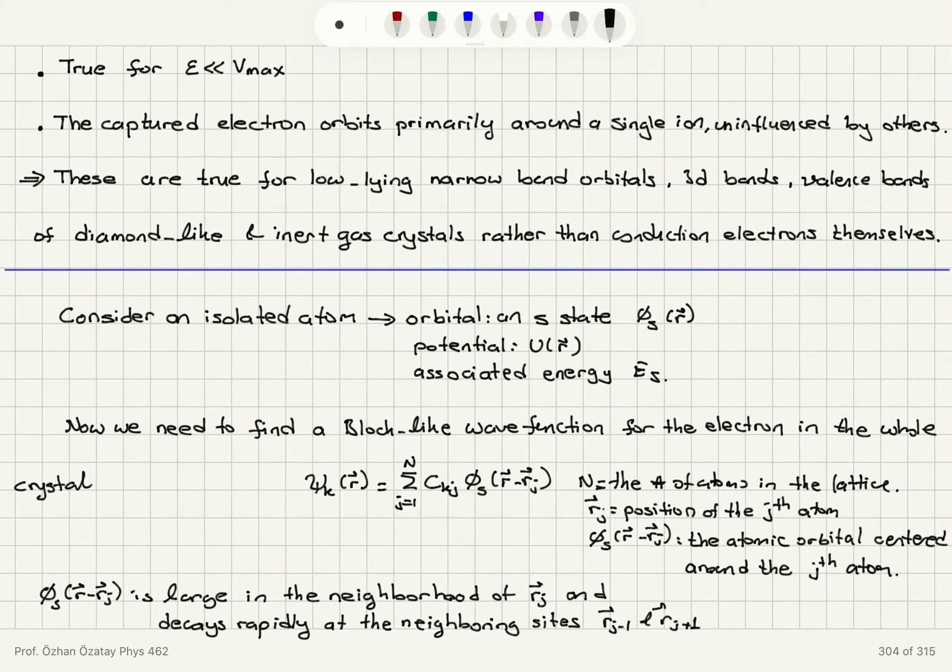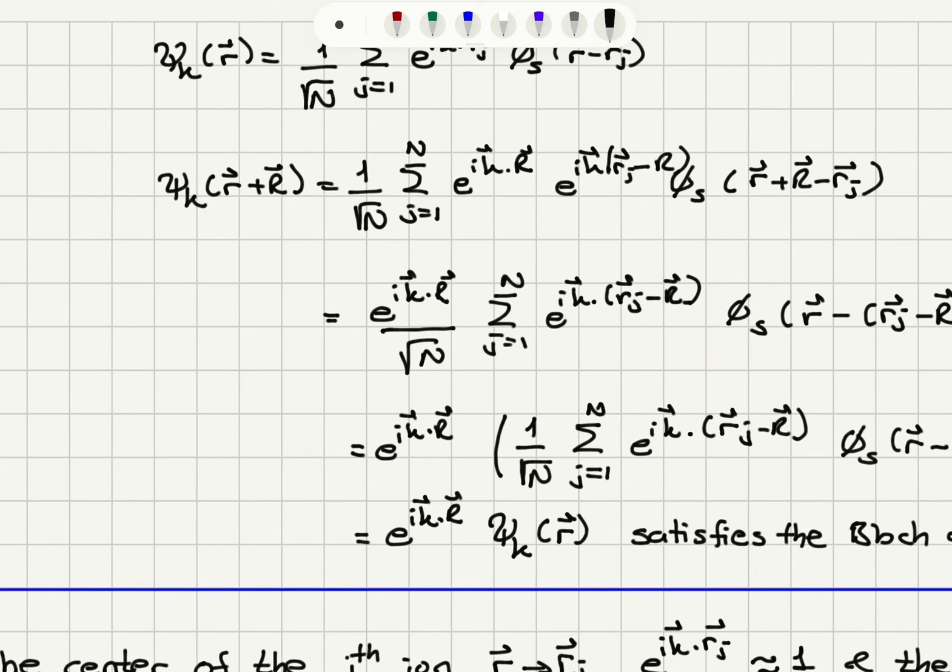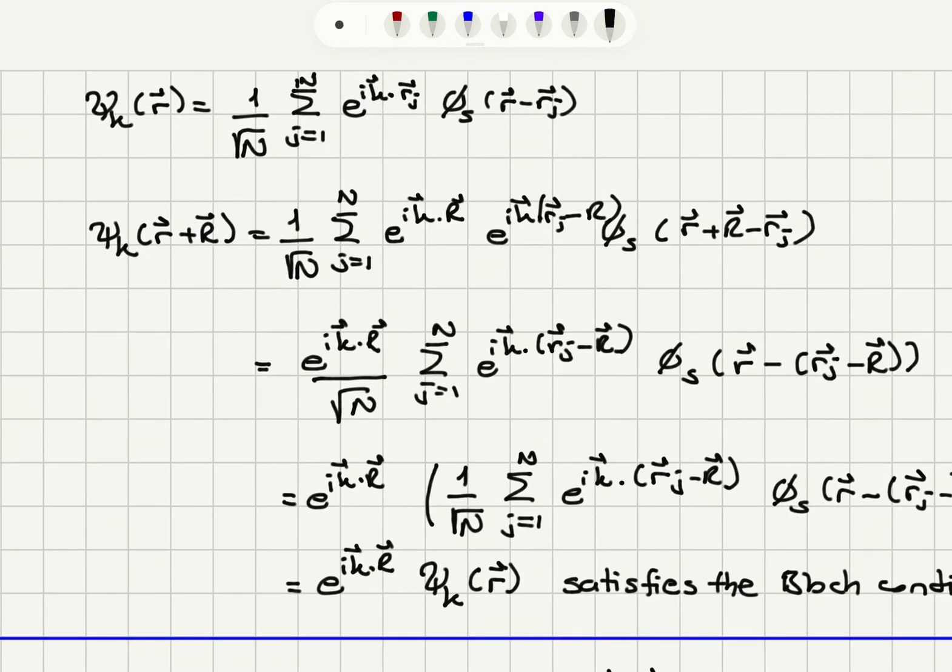So N was the number of atoms in the lattice and so 1 over square root N is my normalization constant and when I add in order to check the validity of this wave function when I add a direct lattice translation vector capital R I'm going to get